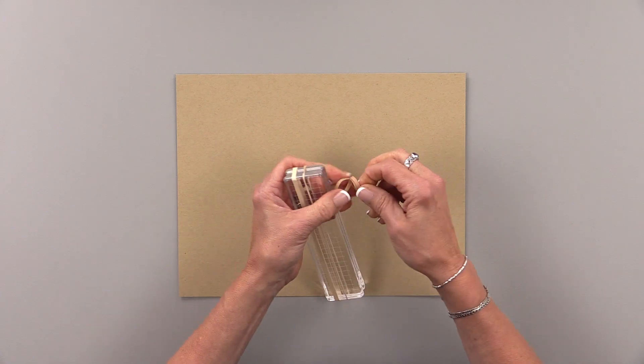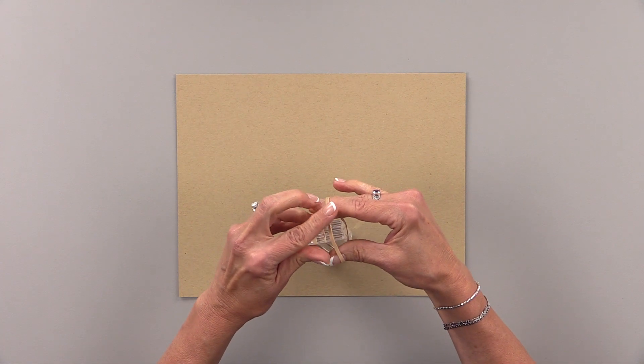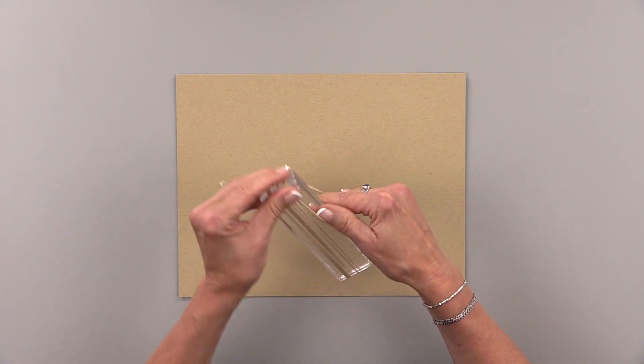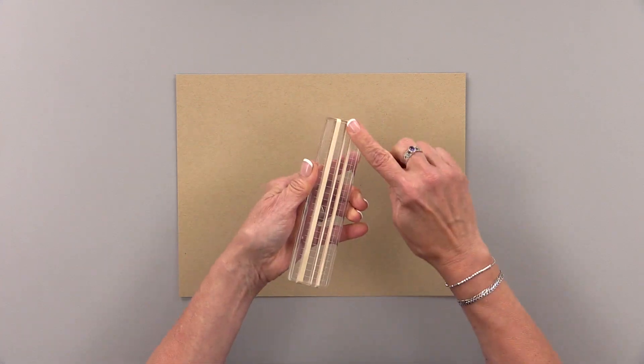My final rubber band is kind of an in-between, not as wide as the first one but not as skinny as the second one. And that gives me three different stripes.